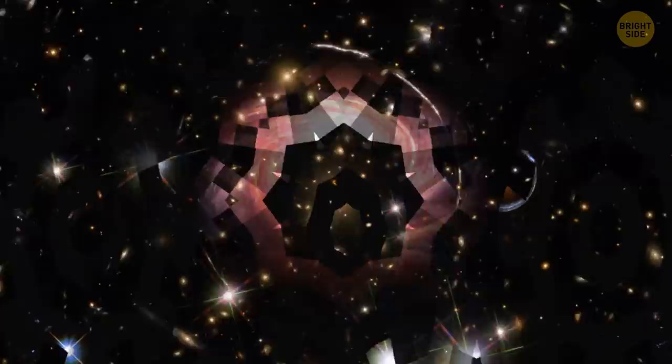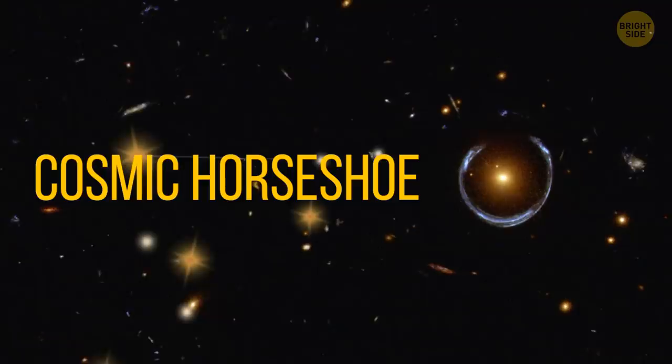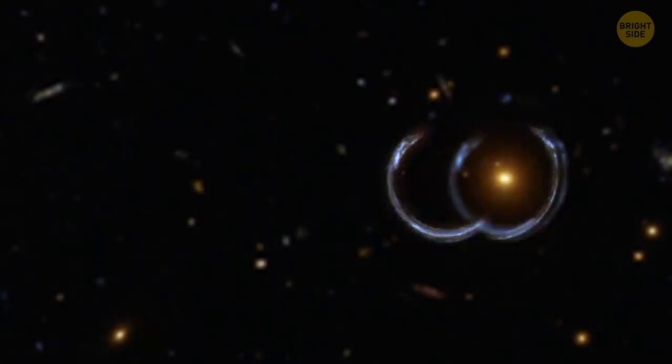And here's the cosmic horseshoe. This bright blue arc is a system of two galaxies in the constellation Leo. The same thing is happening here. The light from these two galaxies passes through a lens of another galaxy, about 100 times heavier than our Milky Way.